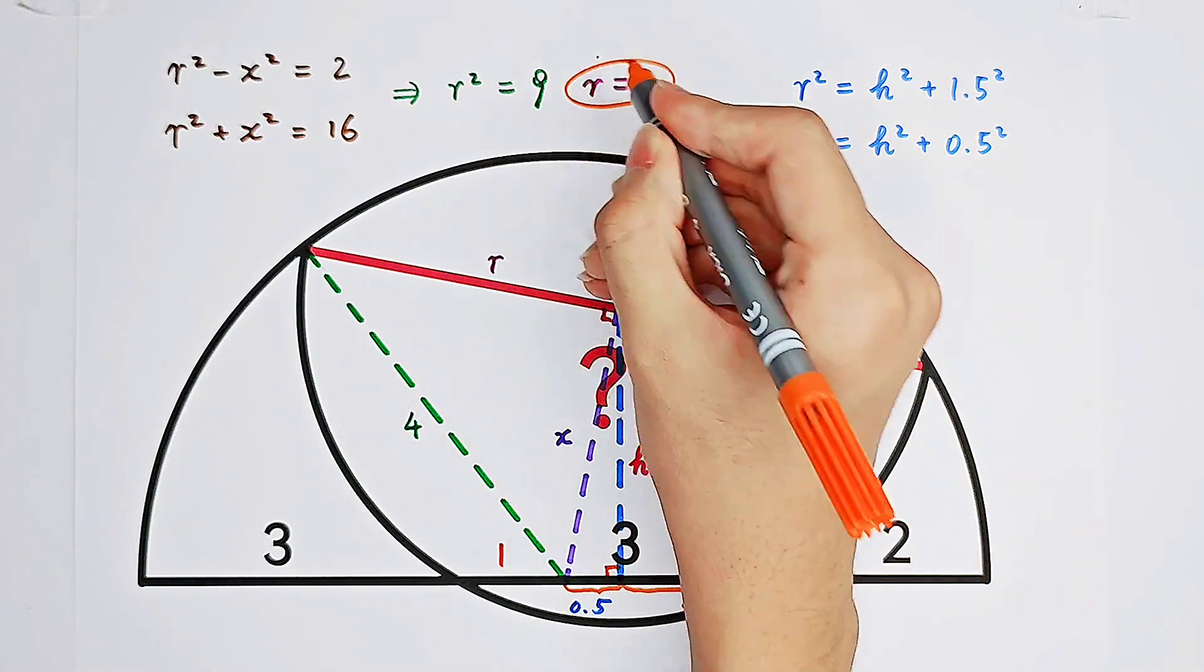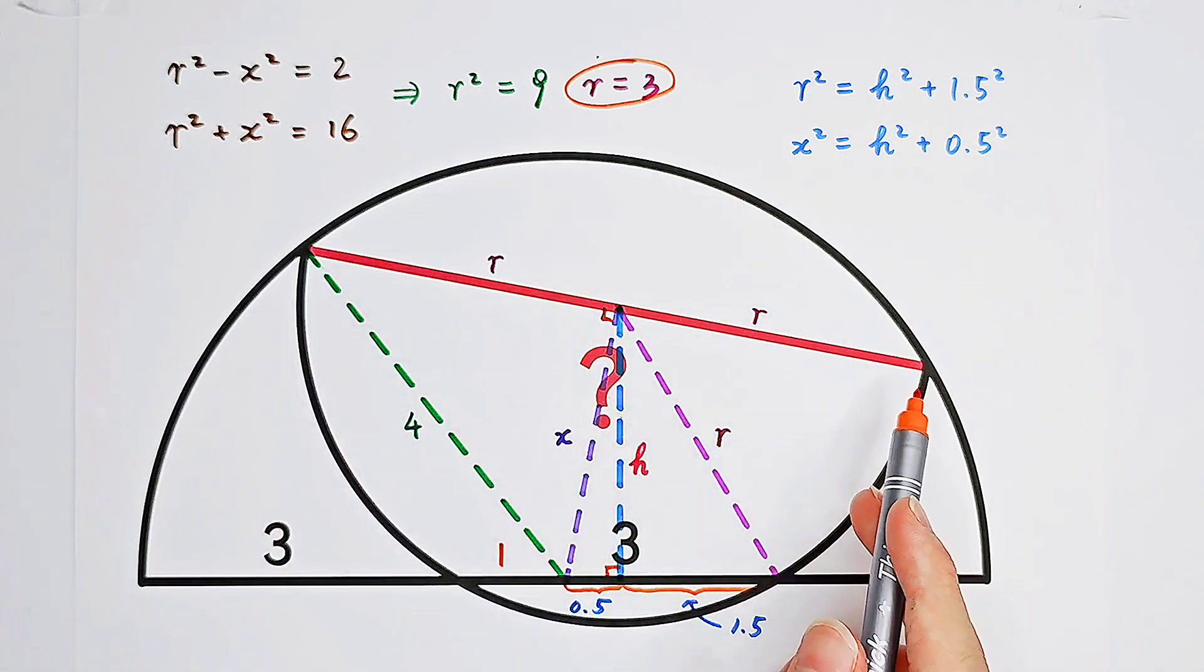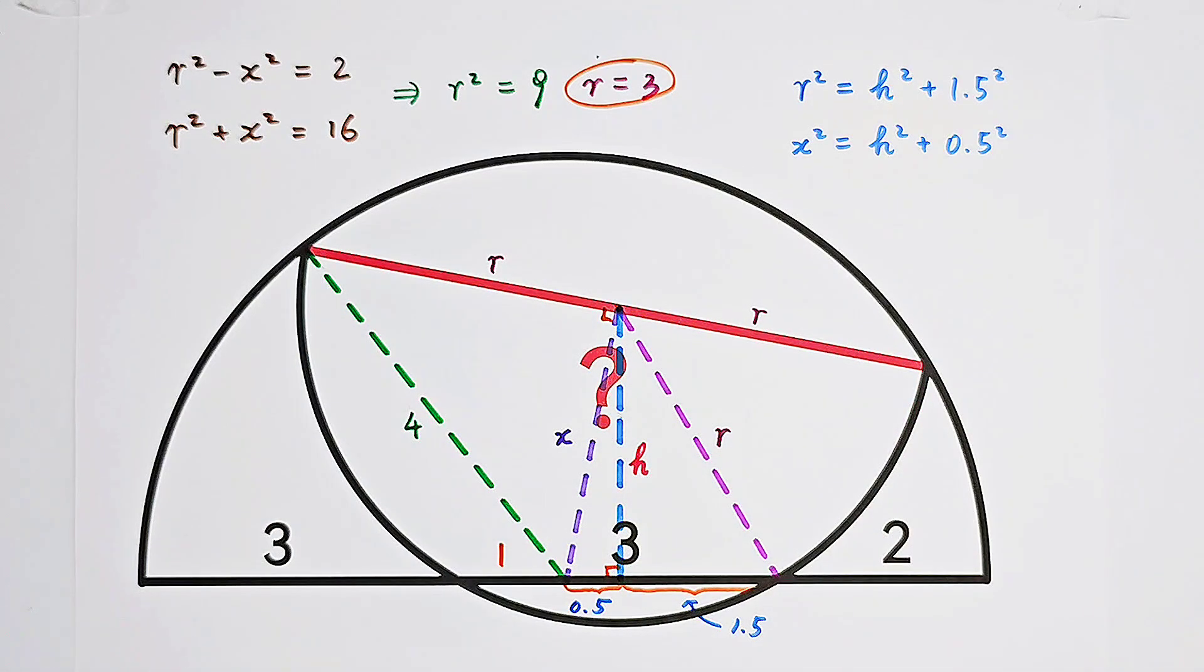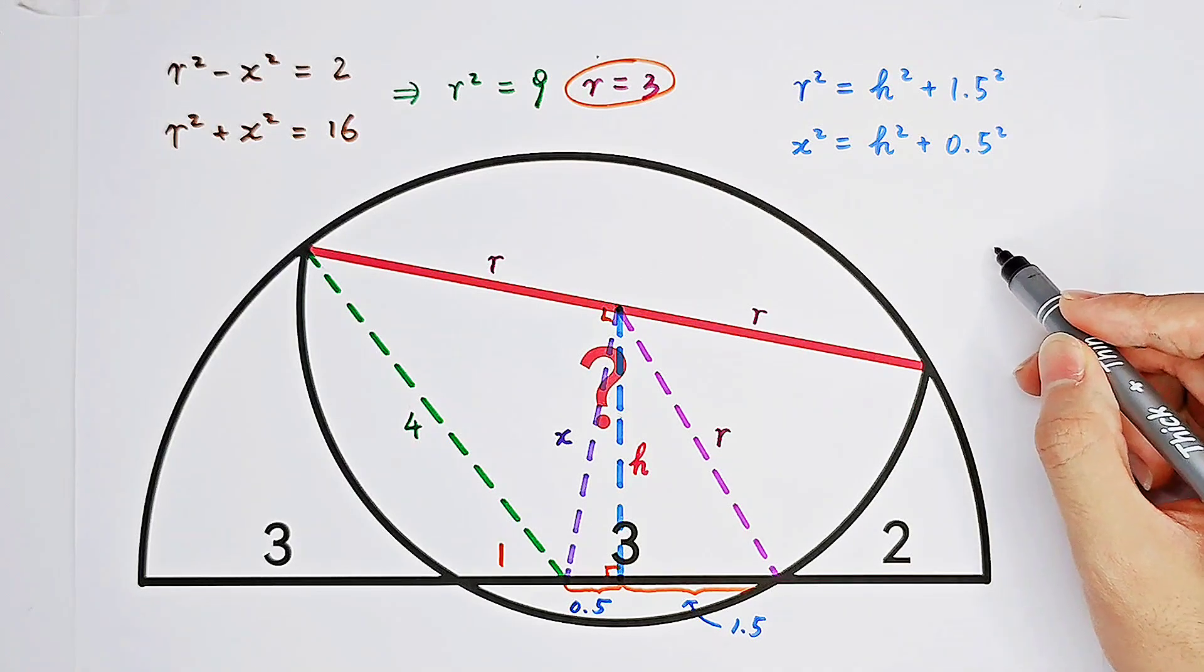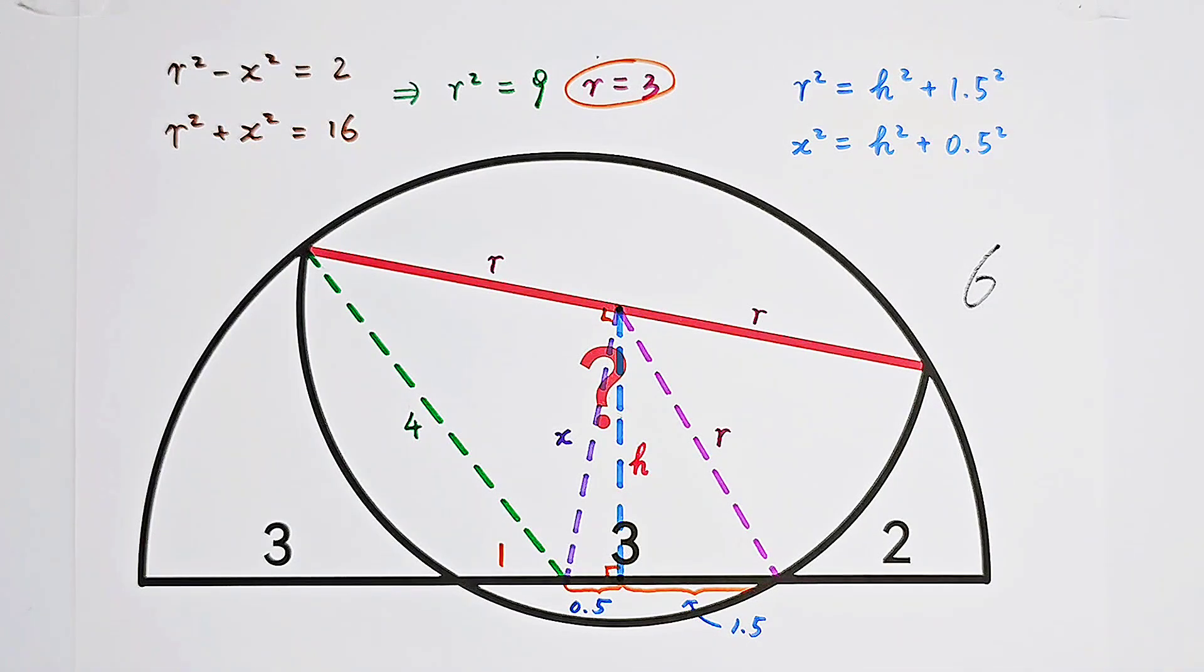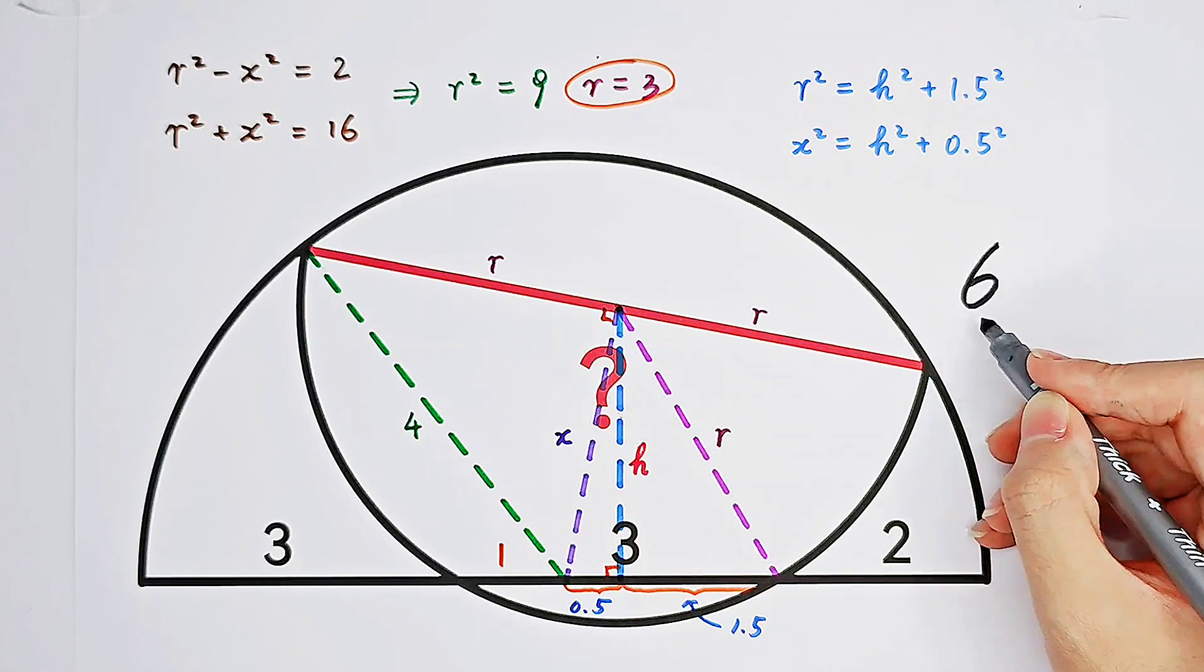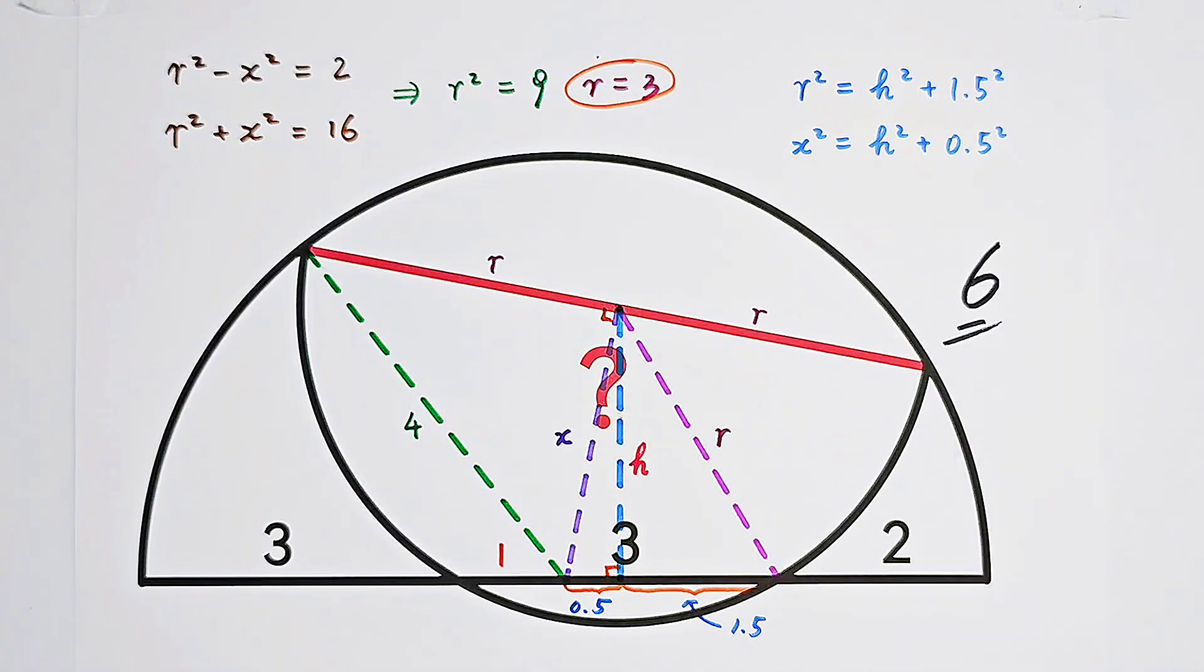If R is 3, we have to solve for the diameter. The diameter is 2 times R, which is equal to, simple and easy, 6. Wait a moment, my pen didn't work well. Now, 6. So 6 is the length of the diameter.